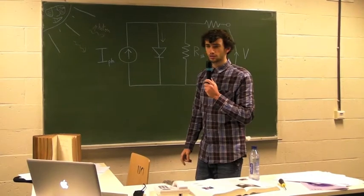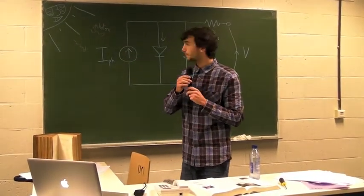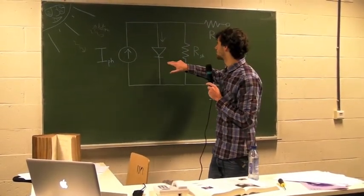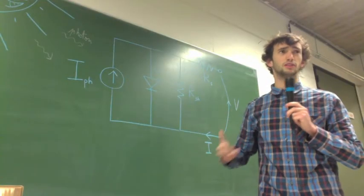The photocurrent generated is generated by photons that create a pair of electron hole. This source is connected in parallel with the diode. It's actually a p-n junction, but it can be represented like a diode.